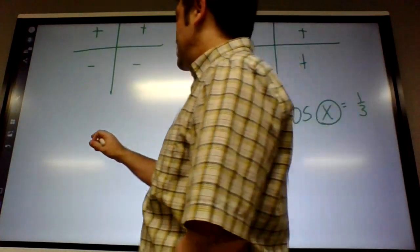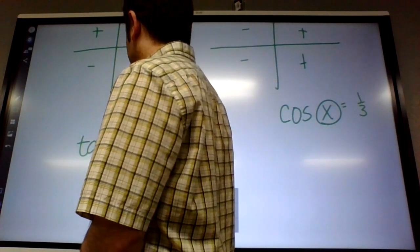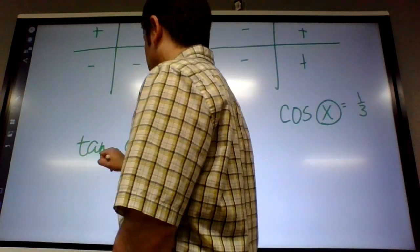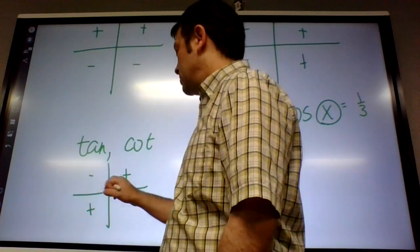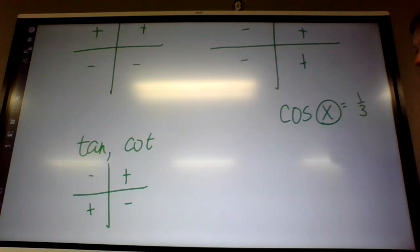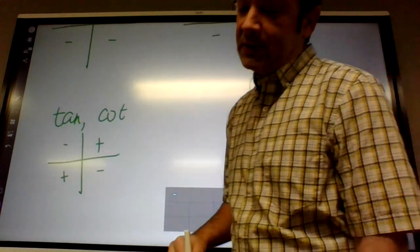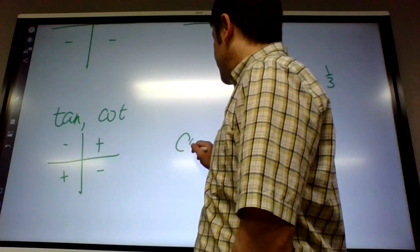And then tangent and cotangent, where are they positive at? First and third? Yeah. Okay. So, on number 17, it says cotangent of x equals six.